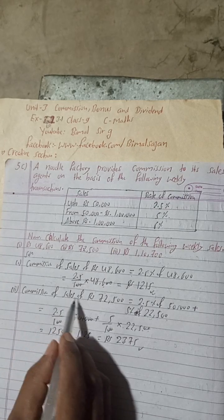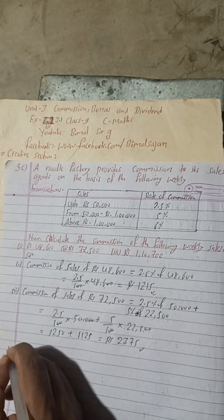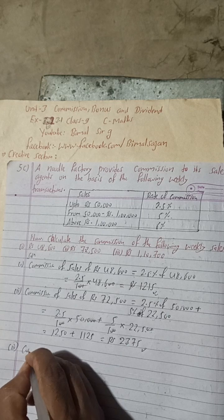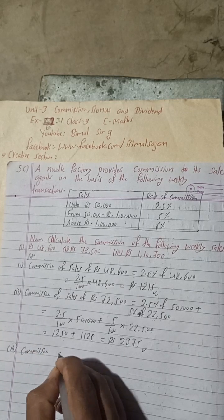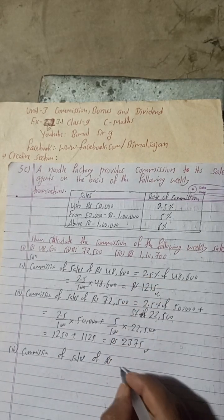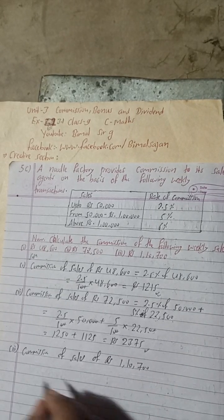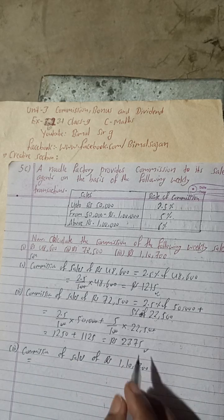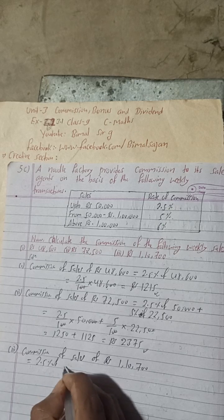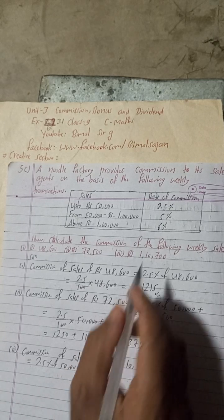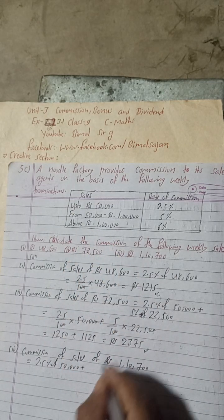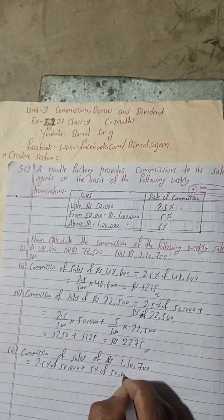Number three: commission of sales of Rs 1,10,700. For this commission, up to Rs 50,000 we apply 2.5%, so that's 2.5% of Rs 50,000. From Rs 50,000 to Rs 1,00,000, that is the next Rs 50,000, we apply 5% — so 5% of Rs 50,000.